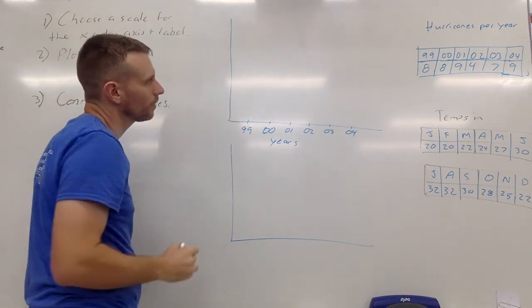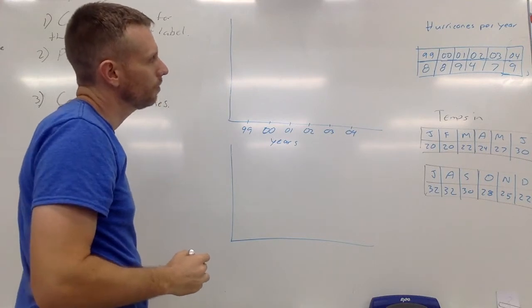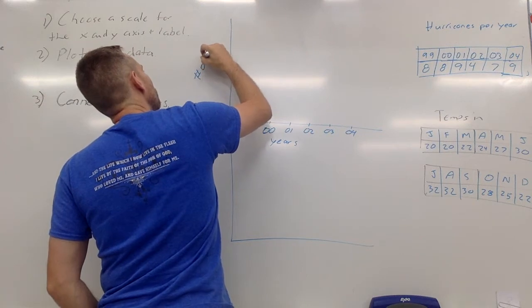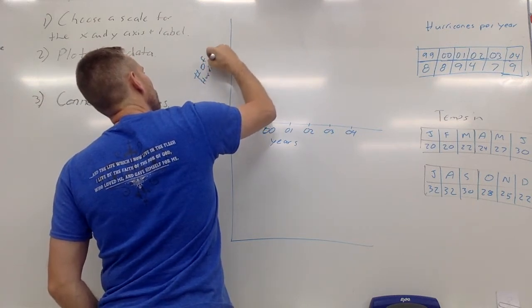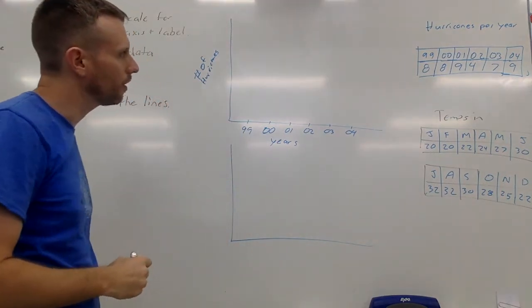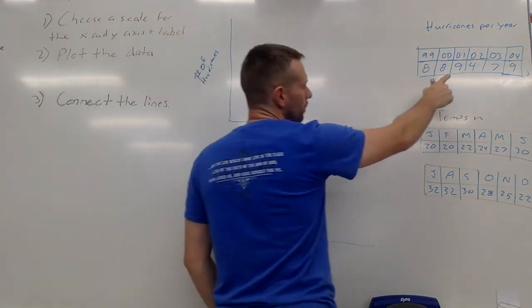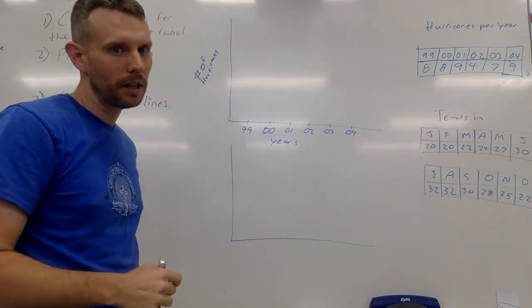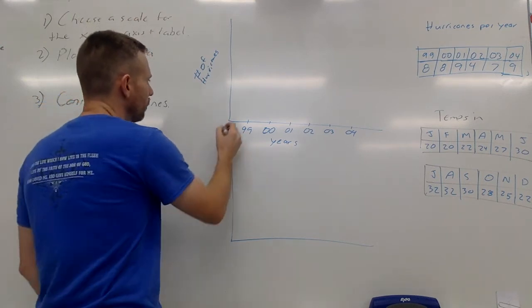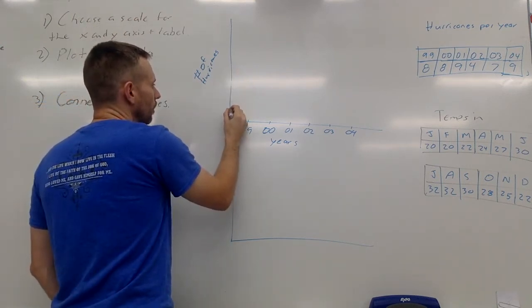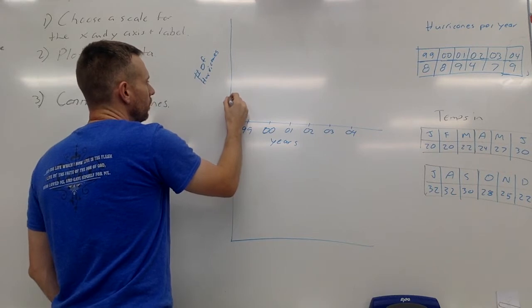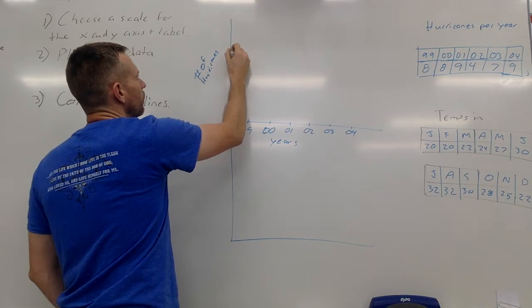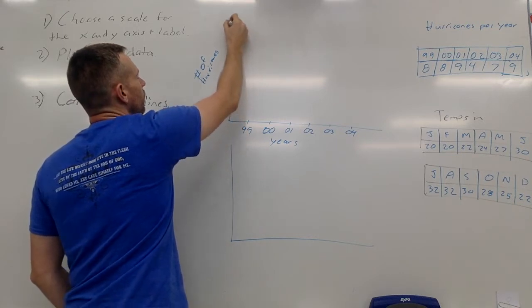2001, 2002, 2003, and I'm only going up to 2004. On my y-axis is going to be the number of hurricanes per year. If I look at my table I can see that I have between four and nine hurricanes - all of my data is between four and nine. So I'm going to start with zero, and again using a ruler, I'm going to mark out increments: one, two, three, four, five, six, seven, eight, nine.